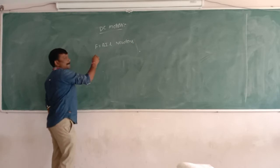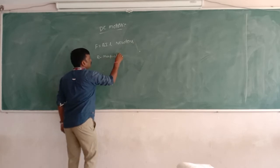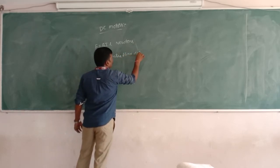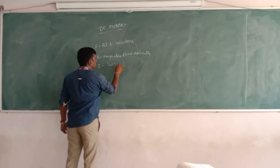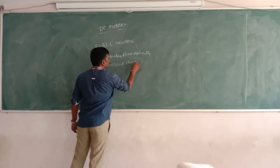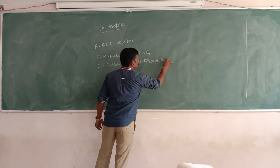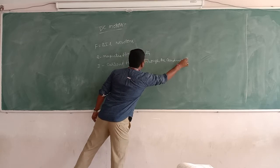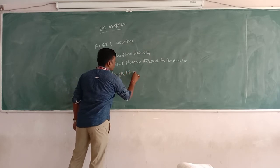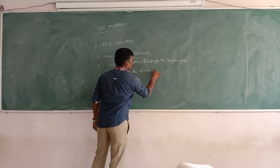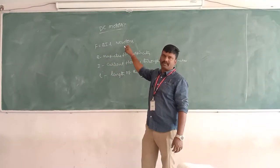In the formula F = BIL: F is the force, B is the magnetic flux density, I is the current flowing through the conductor, and L is the length of the conductor.